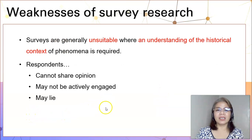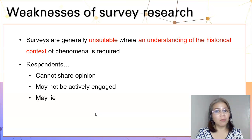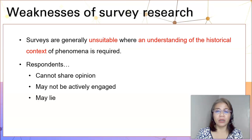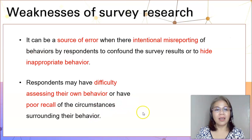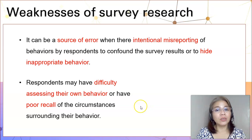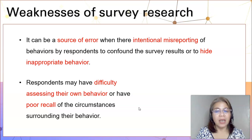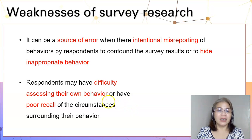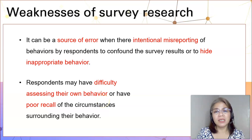Alternatively, a survey research cannot be used if you want to understand the historical context of the problem you want to investigate. Respondents cannot always share their opinion, and they may not be actively engaged in the research endeavor you are undertaking. Worse, they may not answer your questions honestly. Furthermore, a survey research can also be a source of error when you as a researcher, upon analyzing the results, may have an intention to misreport the behaviors of respondents — for example, to confound the survey results or hide inappropriate behavior of respondents. In addition, respondents may also have difficulty assessing their own behavior or may have poor recall of the circumstances surrounding that behavior.